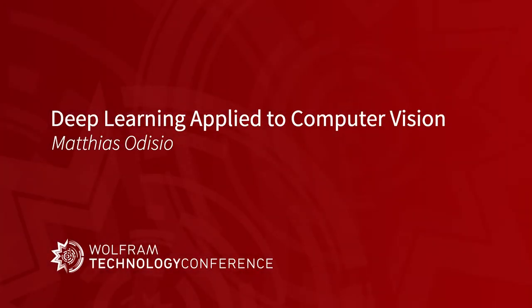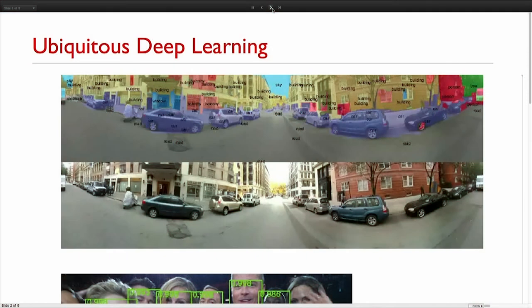This year I gave a talk on computer vision with a focus on deep learning based computer vision applications. Just to first give an idea of how ubiquitous deep learning has become in many computer vision applications, essentially in the last three to four years there's a big gap in performance and quality.